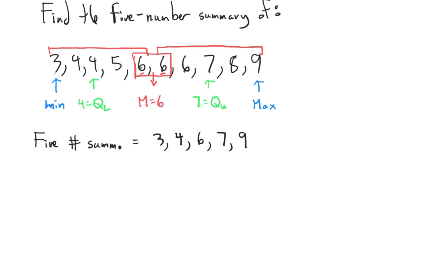And that's how to calculate a five-number summary from a set of data. In the next video, we'll talk about how to graph these in something called a box plot, and then we'll discuss outliers and how the interquartile range can help us determine when values are unusual.